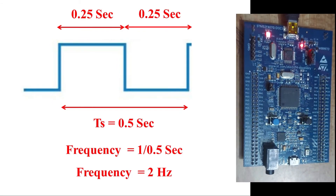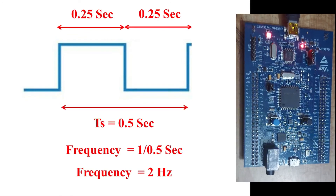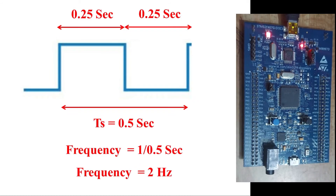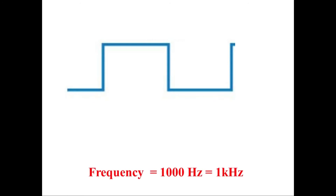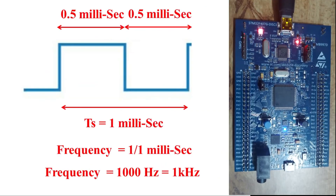Let us double the switching frequency and observe the blinking of the LED on the discovery board. The speed of blinking has increased compared to the previous state, but one can still easily distinguish between the on and off states of the LED. Now we will increase the switching frequency to 1 kHz — that is 1000 Hz — meaning the LED will turn on and off 1000 times every second. A complete cycle will take one millisecond, with the LED on for 0.5 milliseconds and off for 0.5 milliseconds.